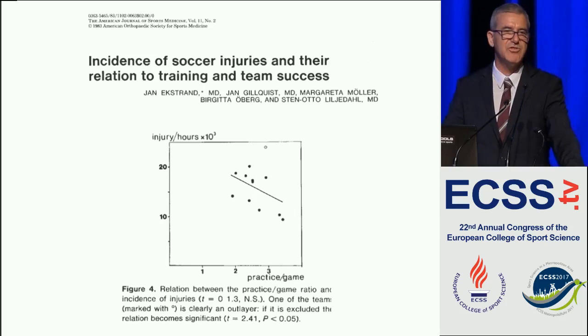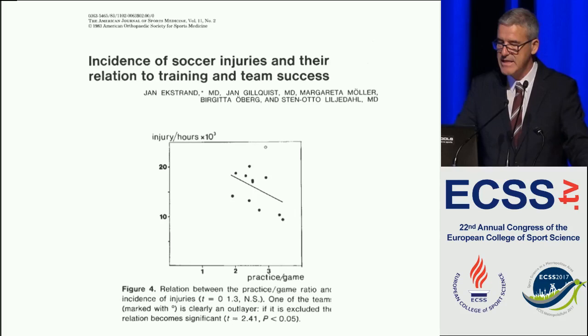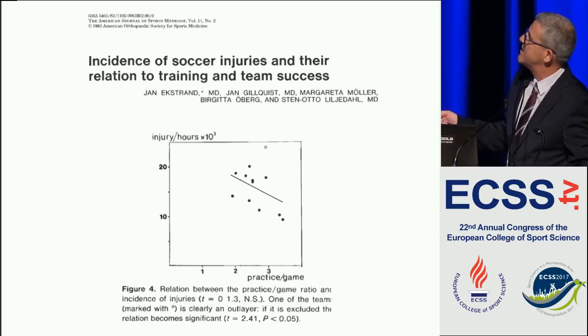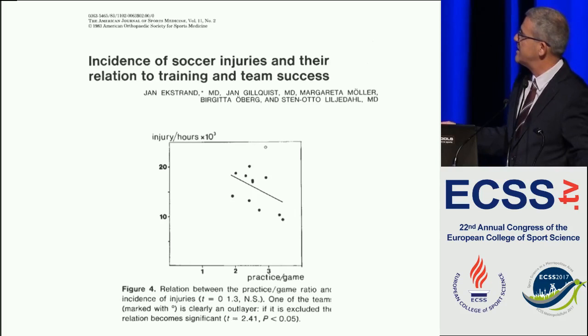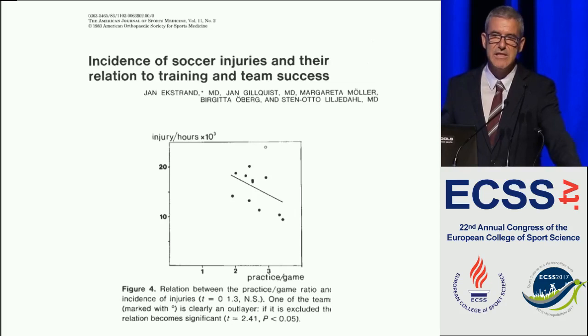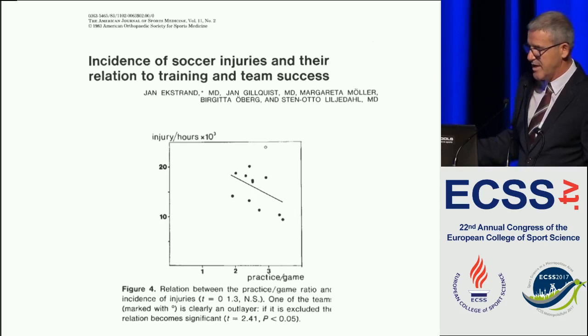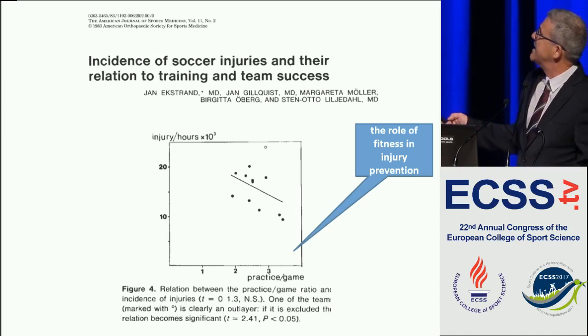Going more specifically into football, this is probably the first study that tried to quantify training workload in football. Professor Jan Ekstra from Sweden published this study in 1986. They had semi-professional, amateur players and plotted the ratio of practice to game against injury incidence. This ratio is probably an index of fitness — the higher the practice time, the better the fitness — and I believe this was the first study to introduce the idea of the role of fitness in injury prevention.